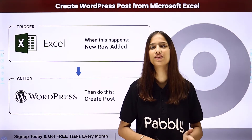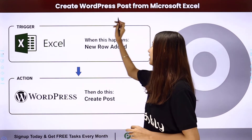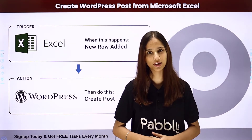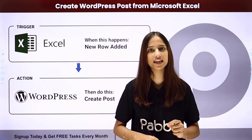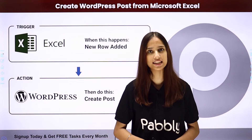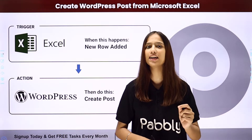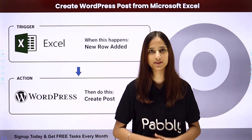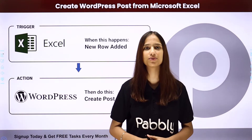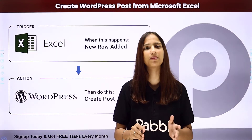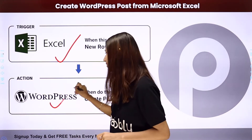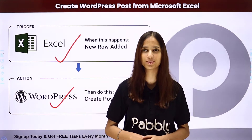Hello everyone, welcome back to Pabbly. In today's video we will understand how to create WordPress posts from Microsoft Excel. I have created a worksheet in Microsoft Excel where I am adding the blog title and the blog content. Whenever I add a new row with the blog title and blog content, a WordPress post should be created automatically. To do this, I need to build an integration using Pabbly Connect. My trigger application will be Microsoft Excel and my action application will be WordPress.